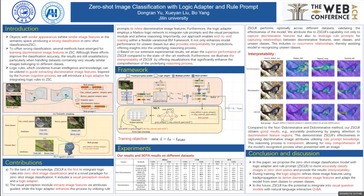Introduction. Objects with similar appearances exhibit similar image features in the semantic space, producing errors in zero-shot classification. To offset wrong classification, several methods have emerged for learning discriminative image features in zero-shot classification, although these efforts improve classification accuracy, the results are still unsatisfactory. Inspired by the human cognitive process, we introduce a logic adapter for integrating logic rules into zero-shot classification.